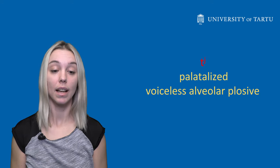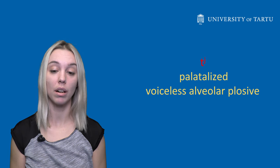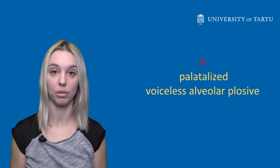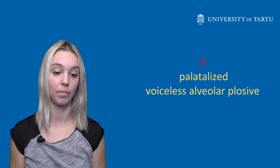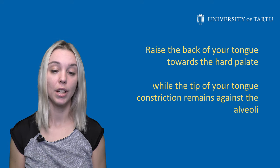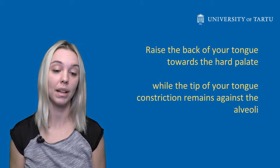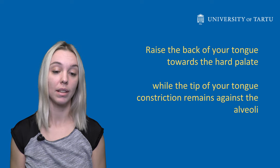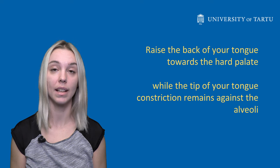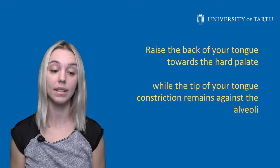T can become palatalized when it is followed by a high front vowel or the approximant consonant. To produce the palatalized t, you raise the back of your tongue towards the hard palate, while the tip of your tongue constriction remains against the alveolar.